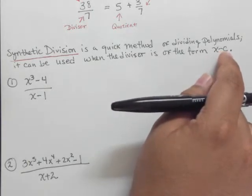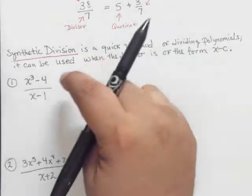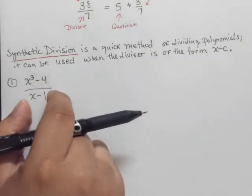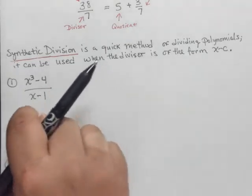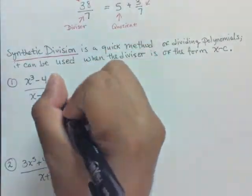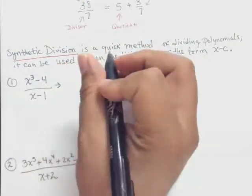It can be used whenever the divisor is of the form x minus c. So the divisor should be what we call a linear factor. It doesn't necessarily have to be a factor of it, but it should be linear in the sense that it's like the equation of a line. All right? So let's write out what the algorithm would look like, okay?